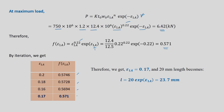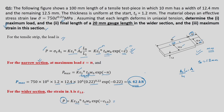Taking four different values of epsilon₁ₐ: at 0.20 we get 0.5746; at 0.18 we get 0.5728; at 0.16 we get 0.5694; and at 0.17 we get 0.571. From this table, we can directly say epsilon₁ₐ equals 0.17, which is the maximum strain in the wider section.